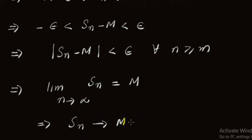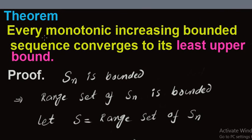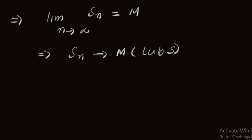And what is M? M is basically the least upper bound for the set S. Our result is now proved, because the statement of the theorem was that every monotonically increasing bounded sequence converges to its least upper bound. So M is the least upper bound of this sequence. Hence proved.